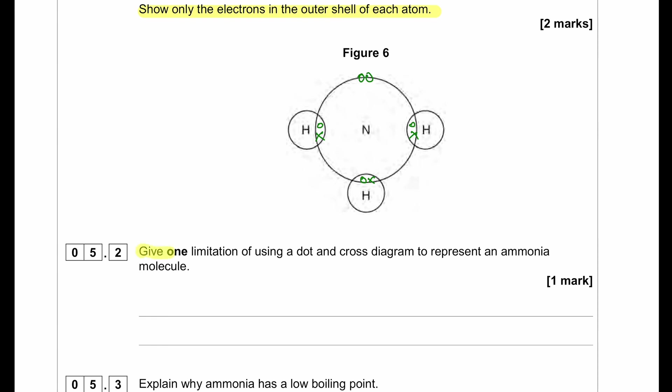Give one limitation of using a dot and cross diagram to represent an ammonia molecule. The limitation of a dot and cross diagram is that it does not show the shape of the molecule — it is just two-dimensional.